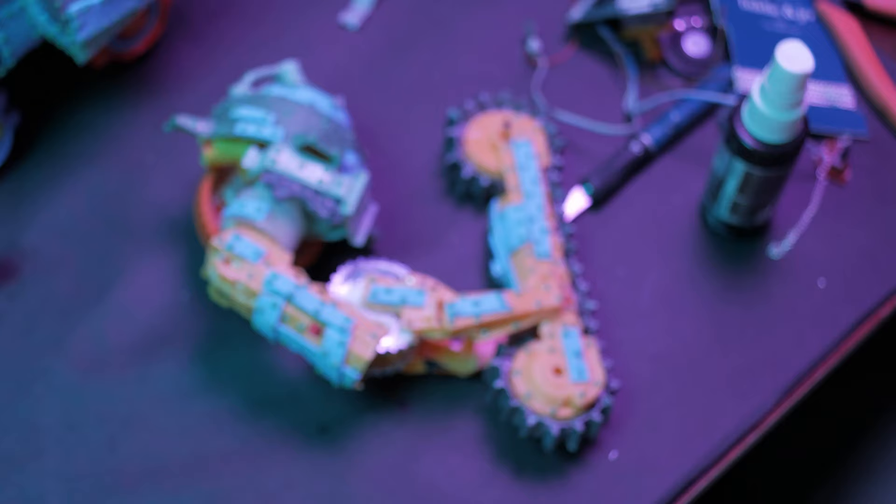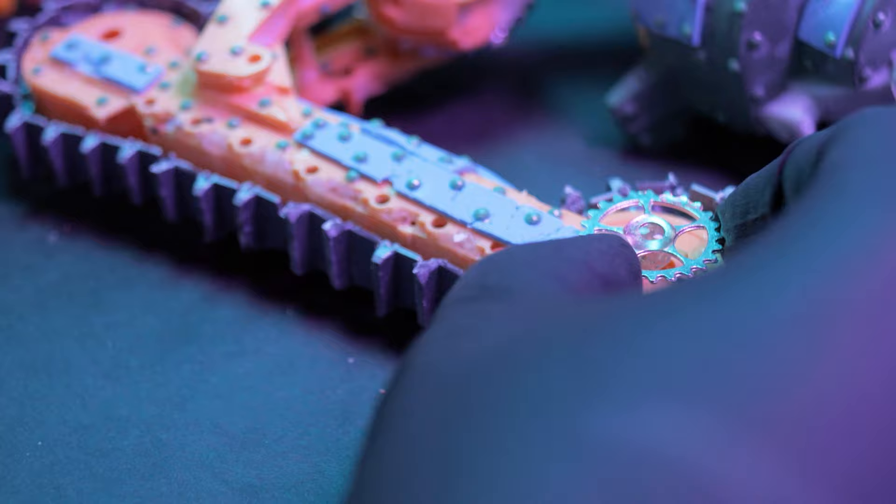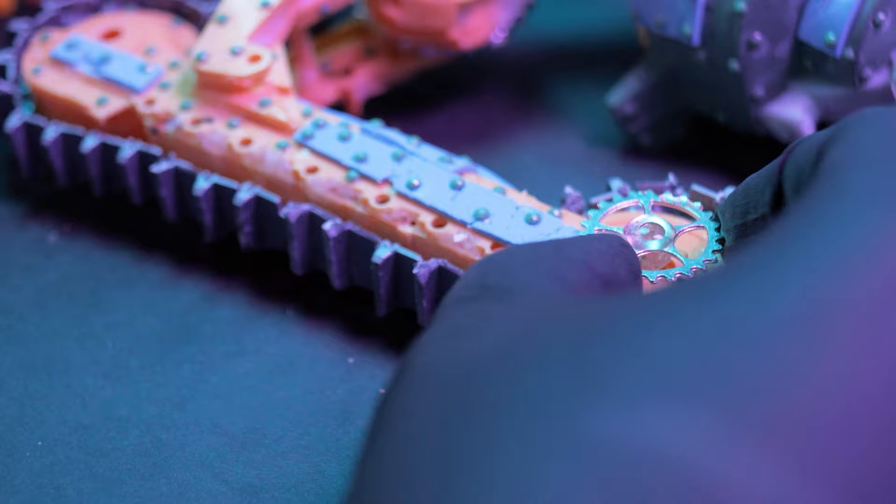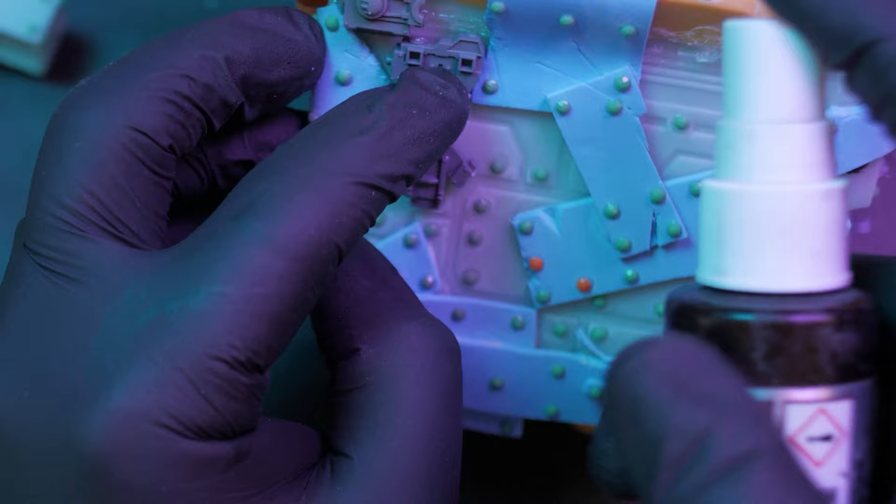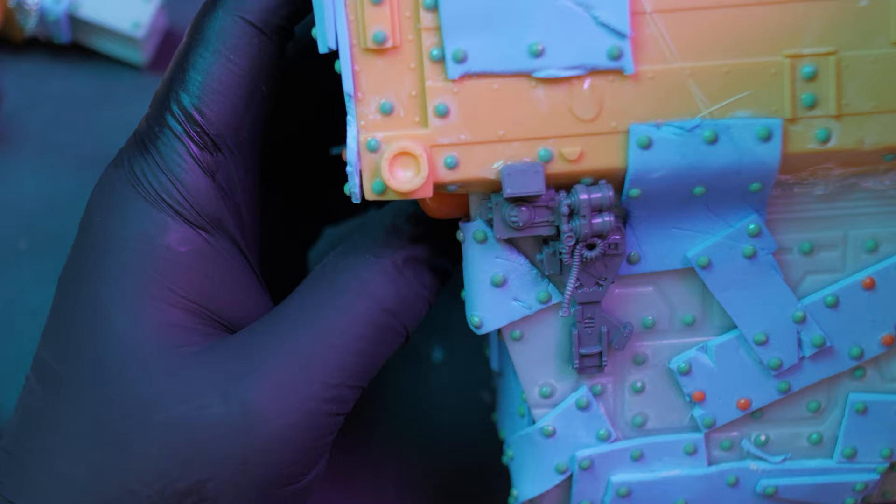Other materials used are some wires pulled from the innards of kids' toys, beads, and small gears. One tip if you greeble at home is to concentrate on certain areas, leaving plenty of open, unaltered spaces. This will trick your mind into looking at the detailed parts and inferring detail on the rest. Of course, having a couple thousand rivets on the model helps a lot too.